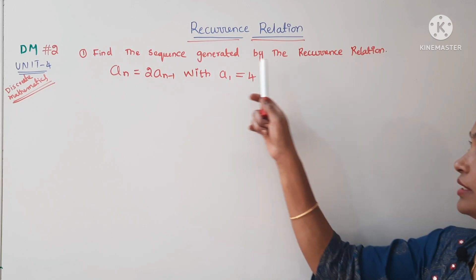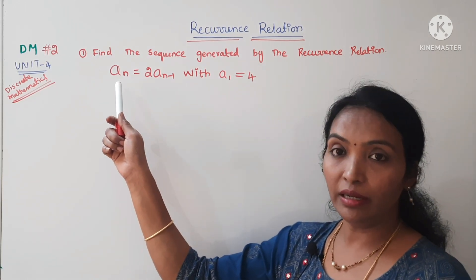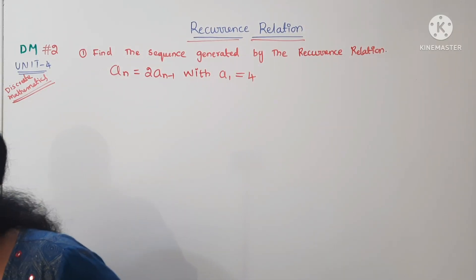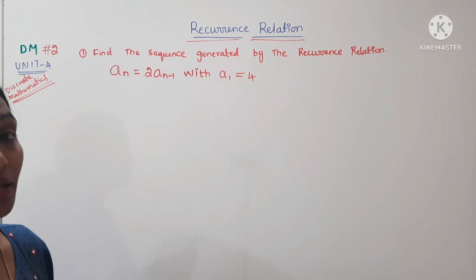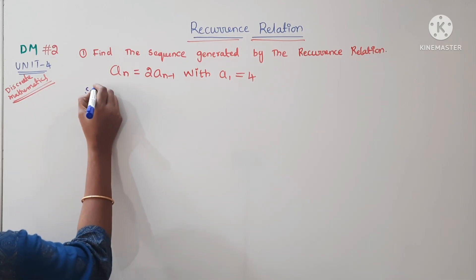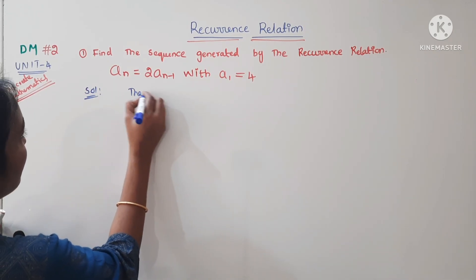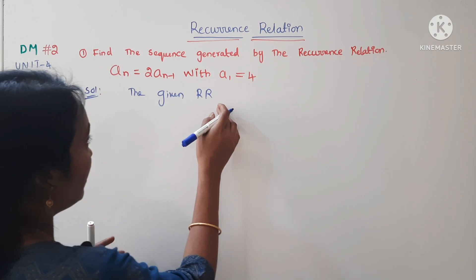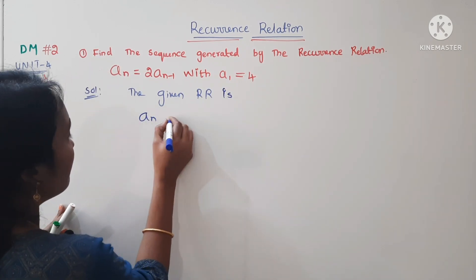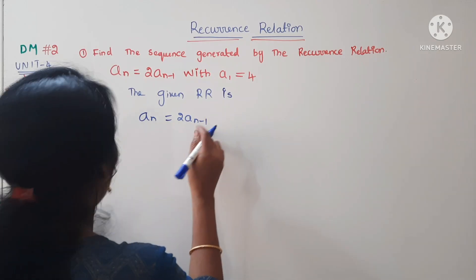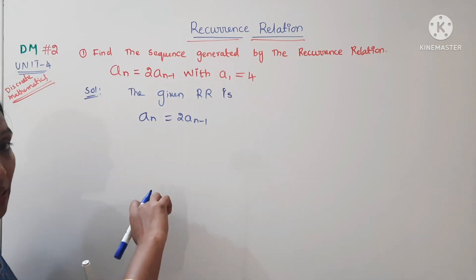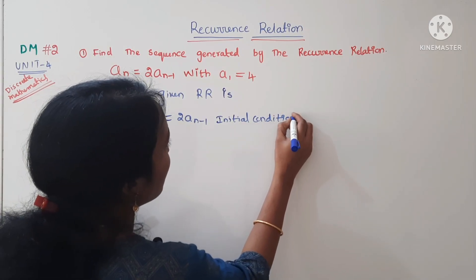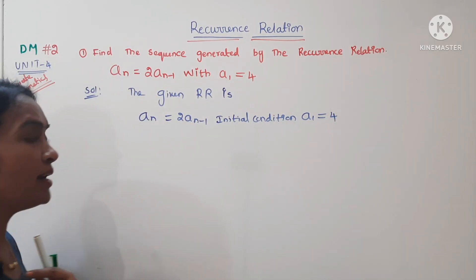In this video, we will find the sequence generated by the recurrence relation. The given question is: find the sequence generated by the recurrence relation aₙ = 2aₙ₋₁, with the initial condition a₁ = 4. This is the given recurrence relation: aₙ = 2aₙ₋₁, and the initial condition is a₁ = 4. We need to find what the sequence is.